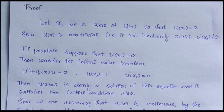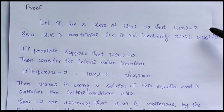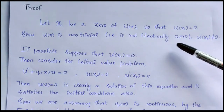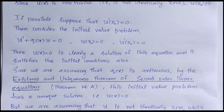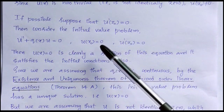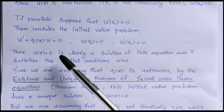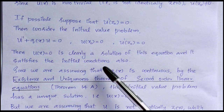Now we will go to the proof of the theorem. Let x0 be a zero of u(x) so that u(x0) = 0. Since u(x) is non-trivial, that is, not identically zero, u'(x0) ≠ 0. Because if we suppose that u'(x0) = 0, then consider the initial value problem u'' + q(x)u = 0 with u(x0) = 0 and u'(x0) = 0. Then u(x) = 0 is clearly a solution of this equation and it satisfies the initial conditions also.